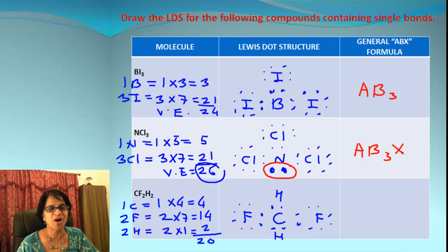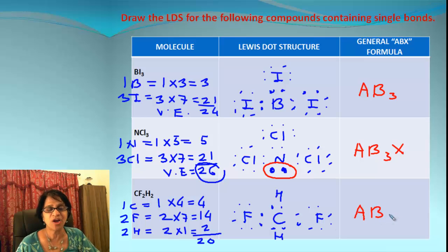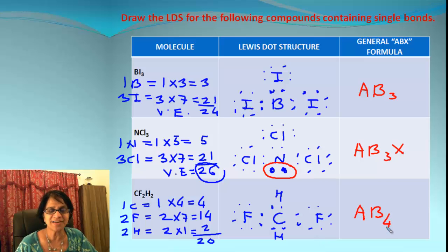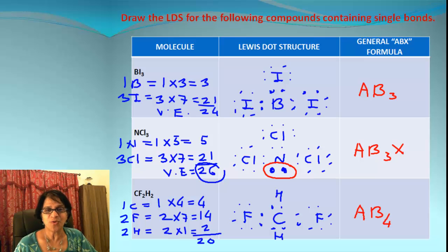Now let's write the ABX formula for CF₂H₂. How many central atoms? Just one. How many surrounding atoms? Although they are different atoms — fluorine and hydrogen — they are all classified as atoms surrounding the central atom, so we have totally 4 surrounding atoms. There is no lone electron pair on carbon that is not shared. So the formula is AB₄. Was it simple and straightforward to draw Lewis dot structures for covalent compounds? I will see you again in the next video!